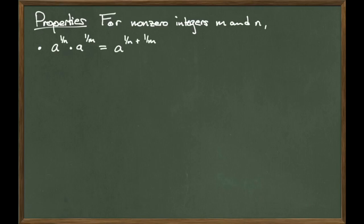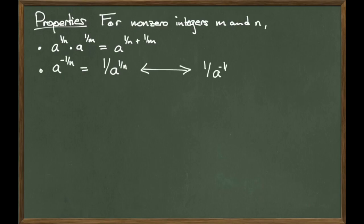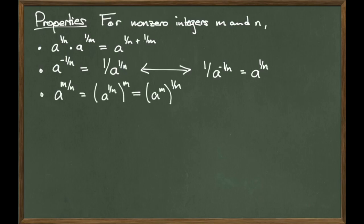These are basically the same kind of properties that you would see with integer exponents. The first says that if I am multiplying numbers with the same base and different exponents, then the exponents add: a to the 1 over n times a to the 1 over m equals a to the 1 over n plus 1 over m. Next, if you encounter a negative exponent, all you have to do is change this number's place in the fraction and drop the negative. So a to the negative 1 over n becomes 1 over a to the 1 over n. Similarly, if I have 1 over a to the negative 1 over n, I get a to the 1 over n. This next property is the one we used on slide 1: if I have a to the m over n, I can split up the fraction. Since m over n equals m times 1 over n, I can write a to the m over n as a to the 1 over n quantity raised to the m power, or as a to the m quantity raised to the 1 over n power.